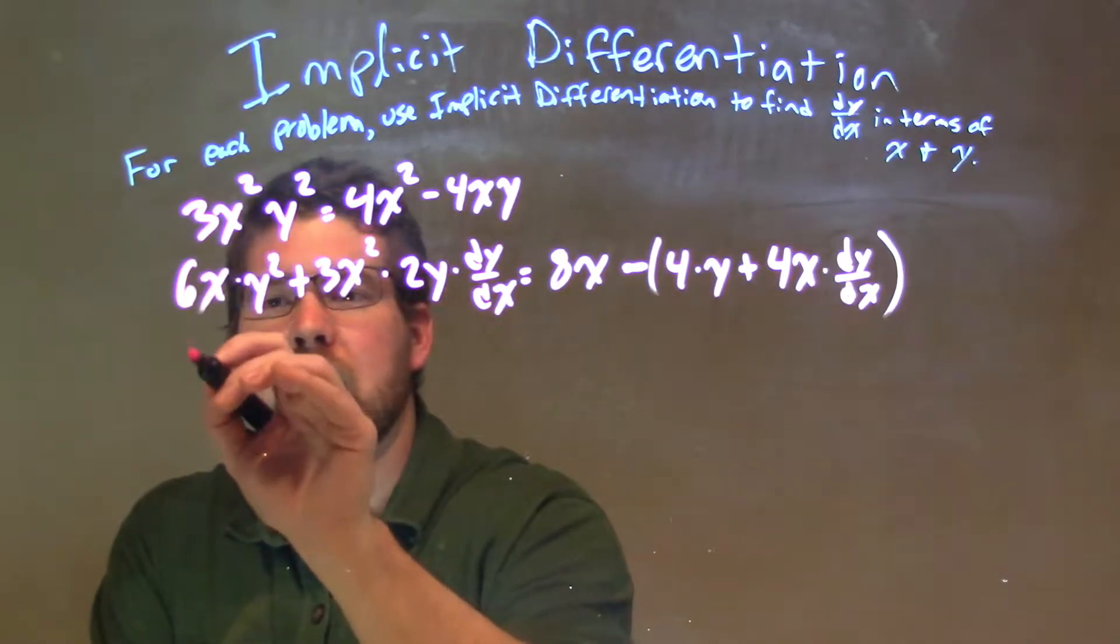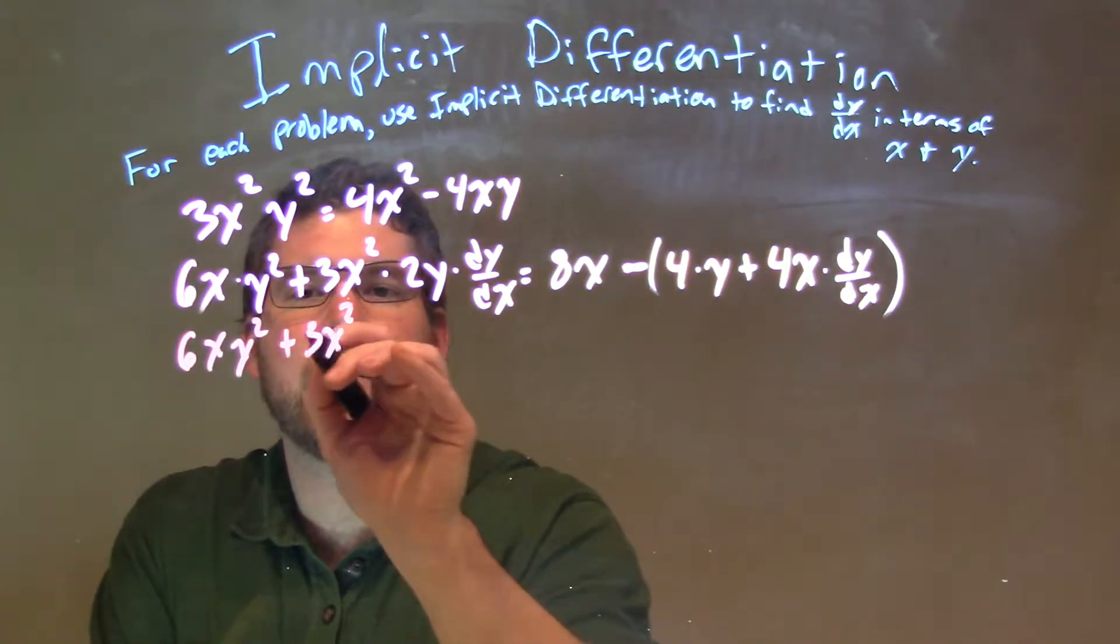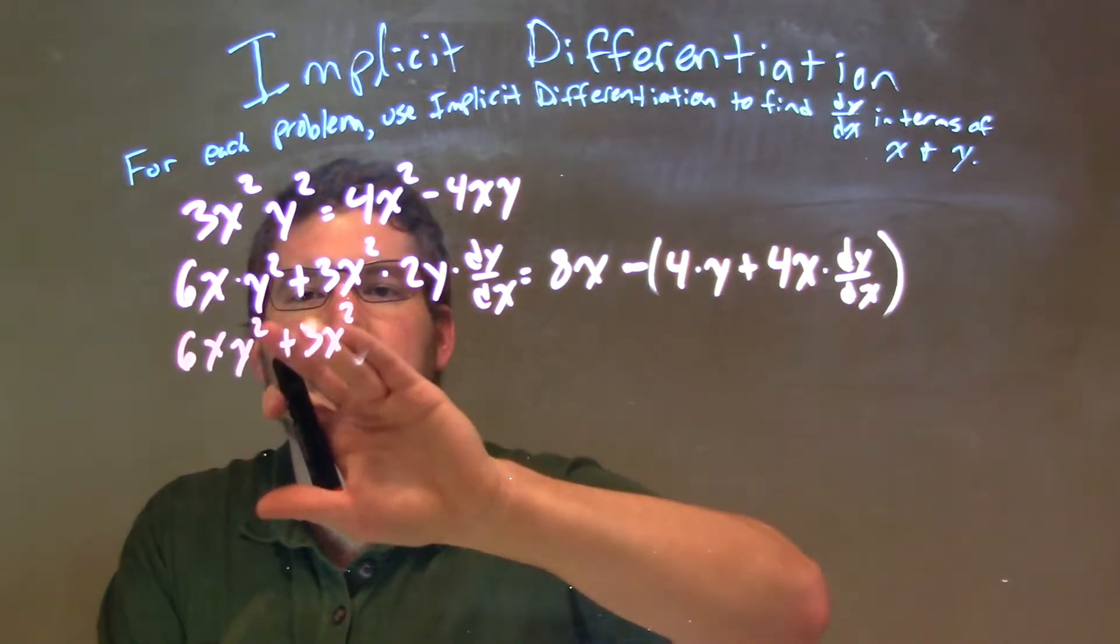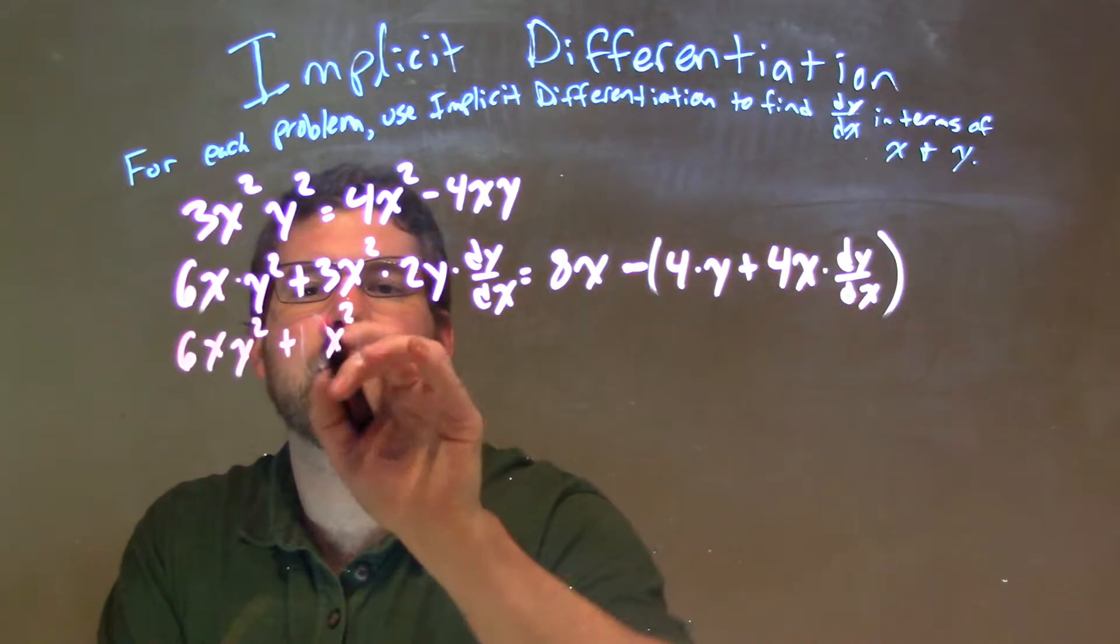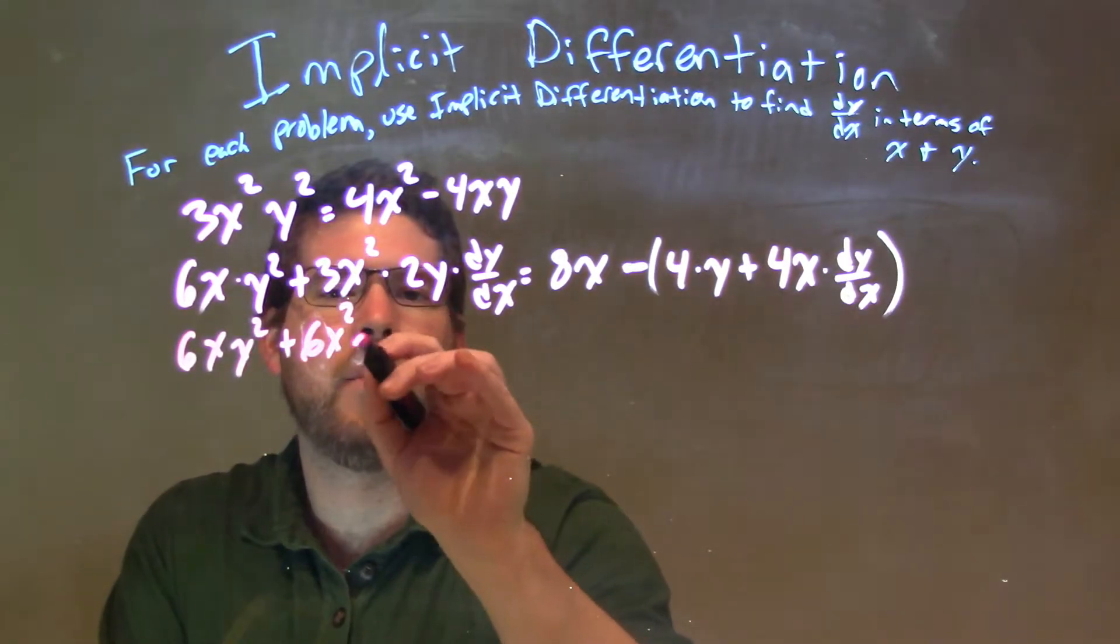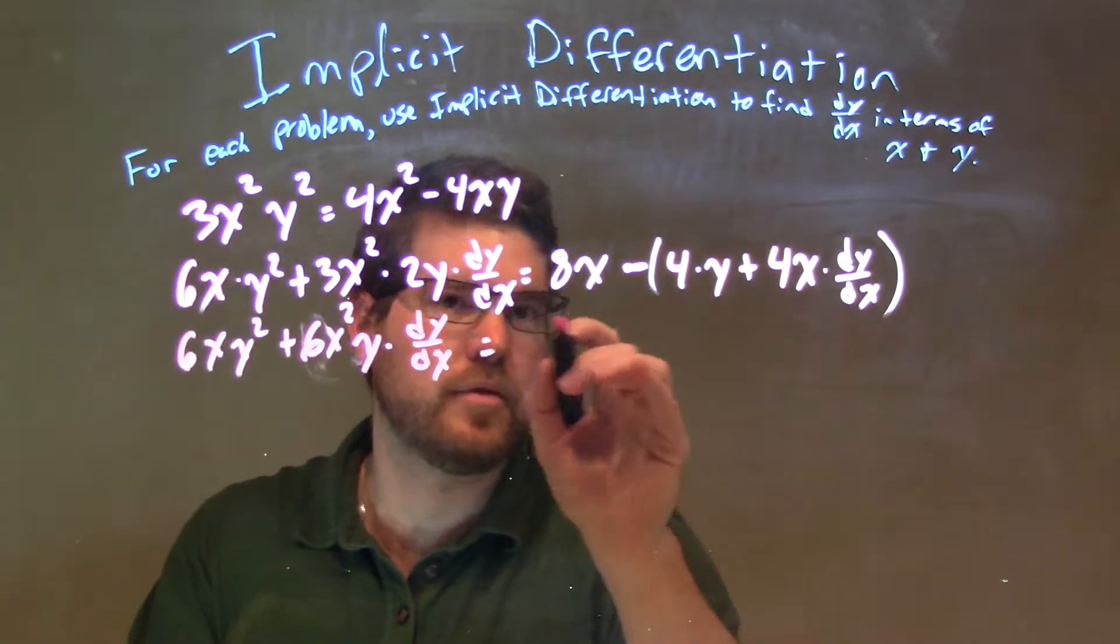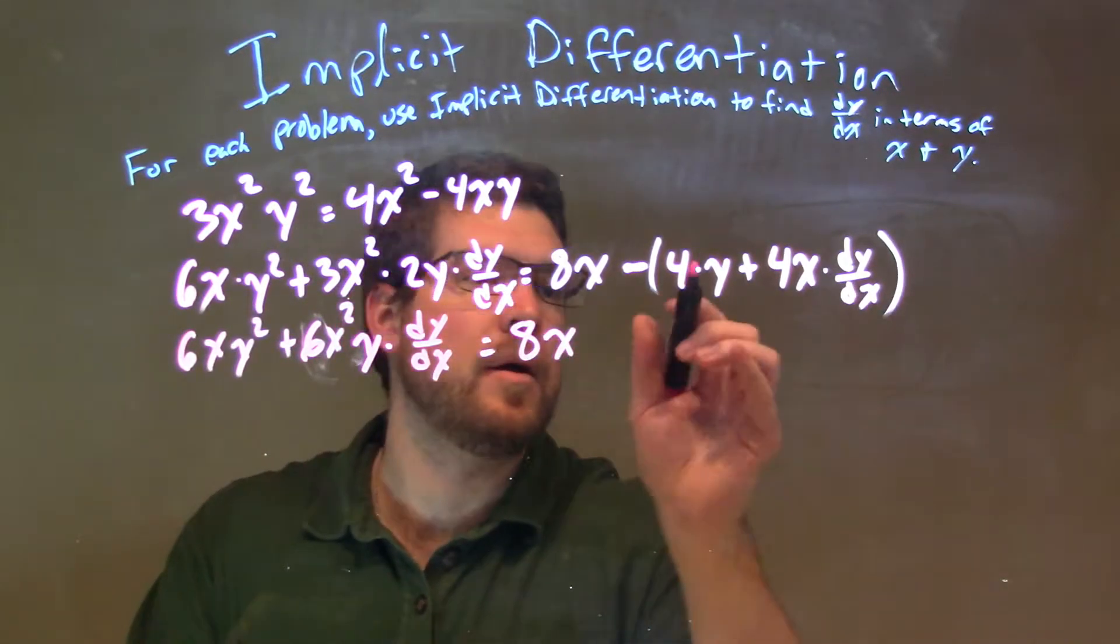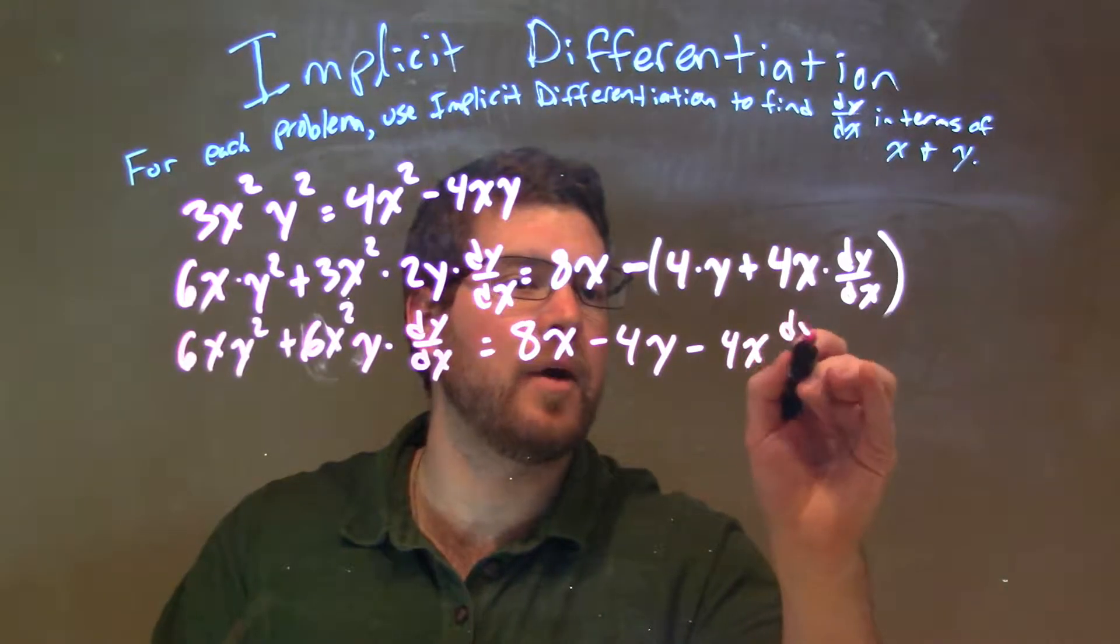So I'm going to leave this the same: 6xy² here plus 3x², multiply 2 times 3, get that out of the way here. 2 times 3 being 6, and then y times dy/dx equals, let's just leave that here, 8x minus 4y minus 4x dy/dx.